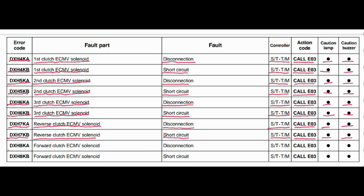Error code DXH8KA. The faulty part is the forward clutch ECMV solenoid. The fault is disconnection. The steering and transmission controller is related to this fault. Action code is E03, caution lamp will blink, and caution buzzer will beep.